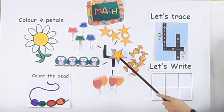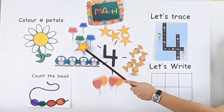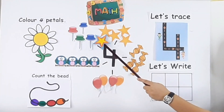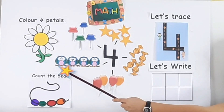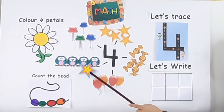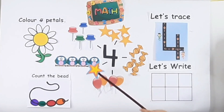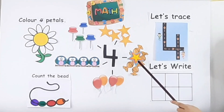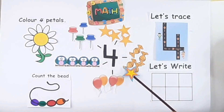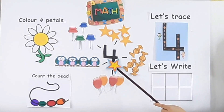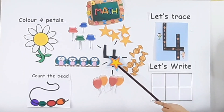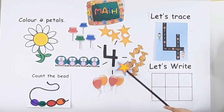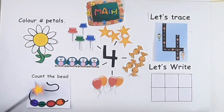Now let's count the nails: 1, 2, 3, 4. How many nails? Four nails. Now let's count the owls: 1, 2, 3, 4. How many owls? Four owls. Now let's count the balloons: 1, 2, 3, 4. There are four toffees. This is number four — four stars, four nails, four owls, four balloons, four toffees.